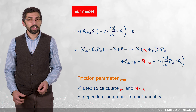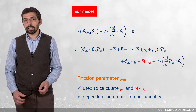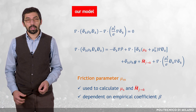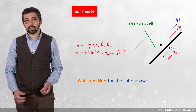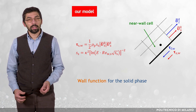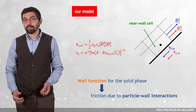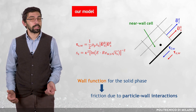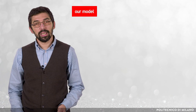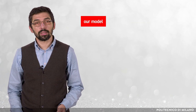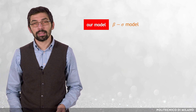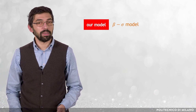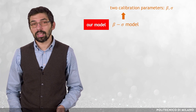The friction parameter, in turn, is obtained through an empirical correlation dependent upon a second coefficient called beta. Finally, the last peculiar feature of the model is a wall function for the solid phase to model the mechanical friction produced by particle-wall interactions. Our Eulerian-Eulerian model has been referred to as the beta-sigma model to highlight the presence of the two empirical coefficients, beta and sigma, whose values have to be obtained by experimental calibration.